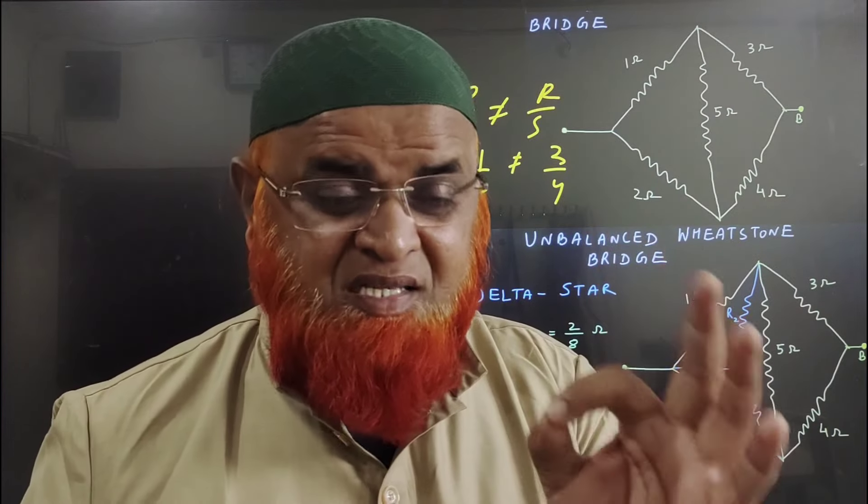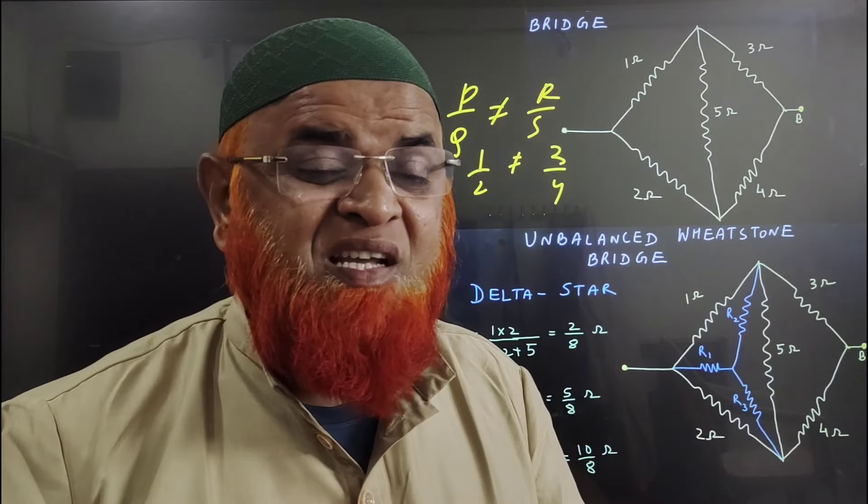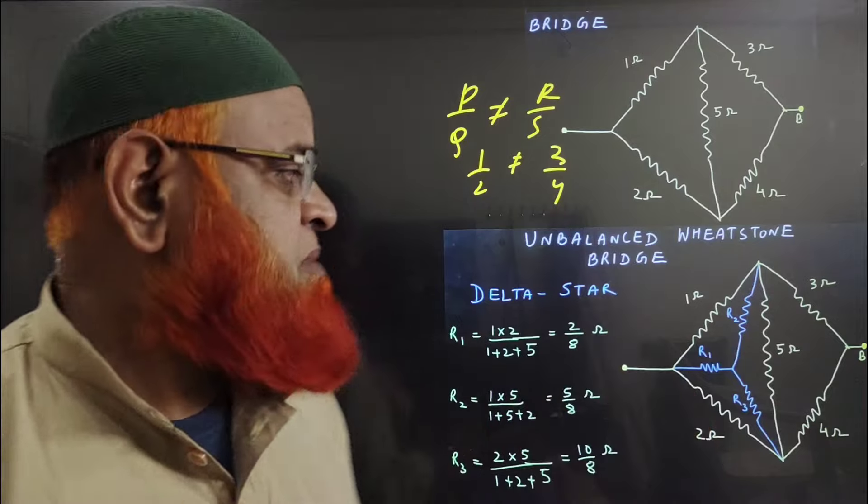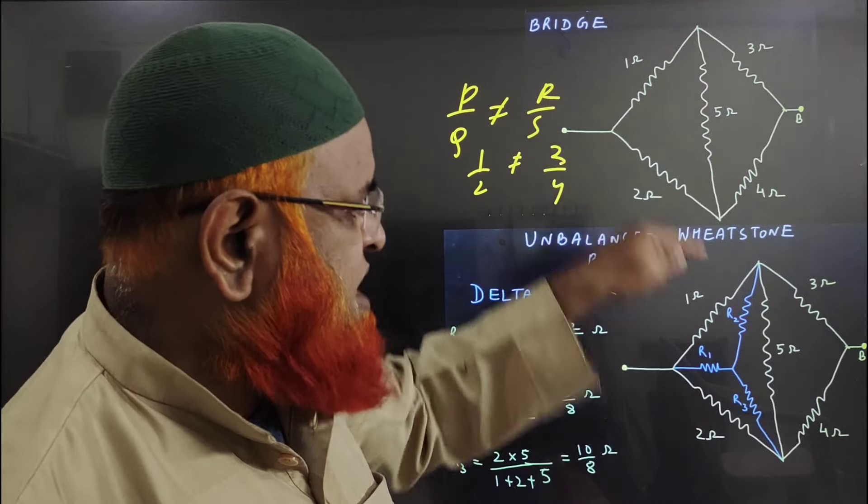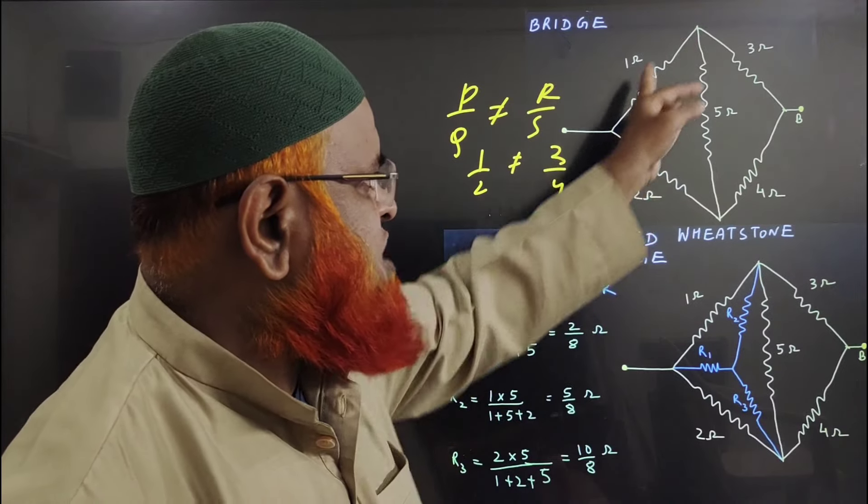This type of bridge can be solved by using delta-star trick. What is the meaning of delta-star trick? This is just like delta - it should be converted into star. That means a triangle shape is converted into this type of triple wires.